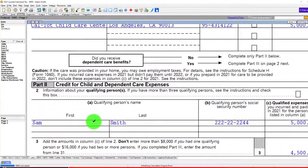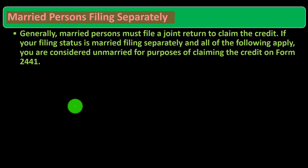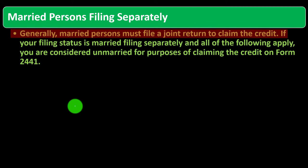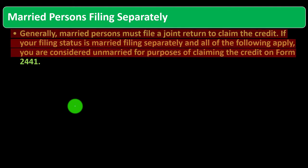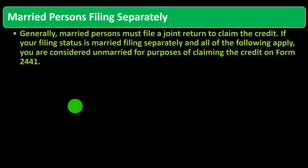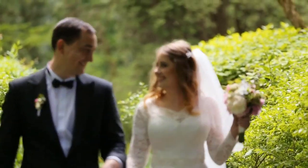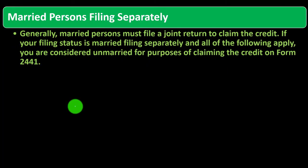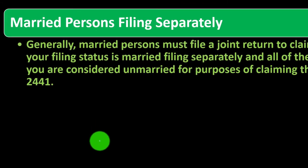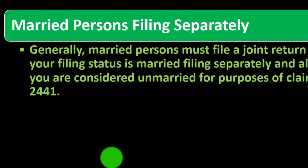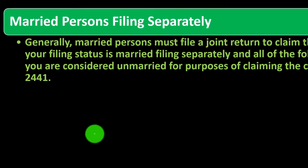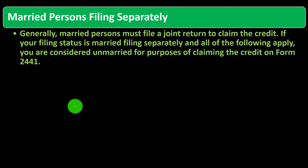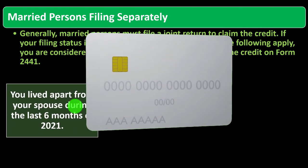Married persons filing separately face an unusual situation where the IRS is more skeptical. Generally, married persons must file a joint return to claim the credit. However, if your filing status is married filing separately and certain conditions apply, you may be considered unmarried for purposes of claiming the credit on Form 2441. Under most conditions, choosing married filing separately means losing the ability to take some credits — possibly including this one — unless you qualify for that unusual exception.